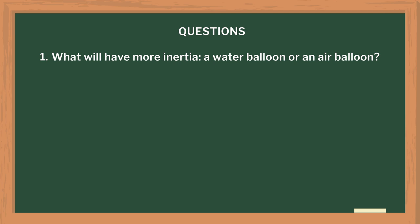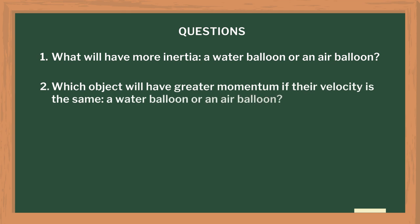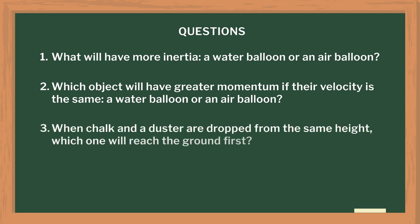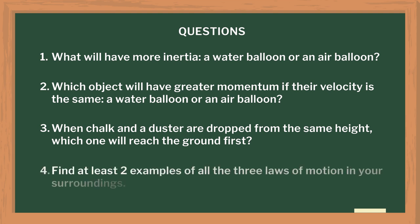To end the session, we can ask the following thought-provoking questions as homework: What will have more inertia — a water balloon or an air balloon? Which object will have greater momentum if their velocity is the same — a water balloon or an air balloon? When chalk and a duster are dropped from the same height, which one will reach the ground first? Find at least two examples of all three laws of motion in your surroundings. In my experience, the students grasp the concepts much more easily with this method and have a lot of fun. Please try these activities in your own classrooms and let us know your experience. The details of each activity are given in the text lesson plan, which you will find in the description of this video.